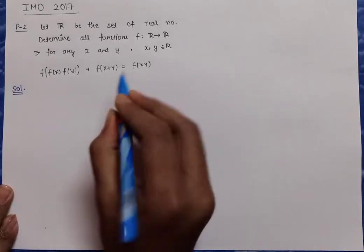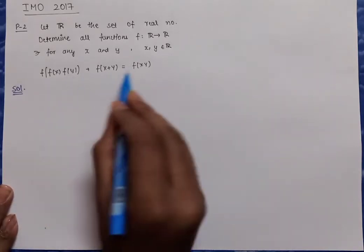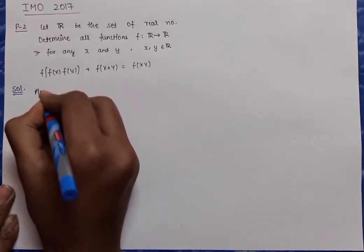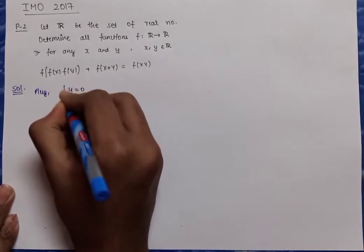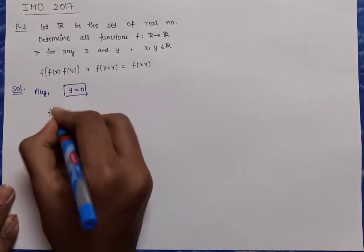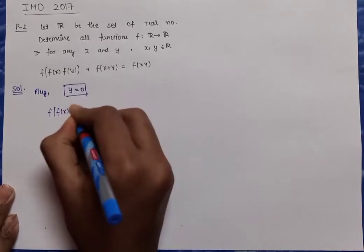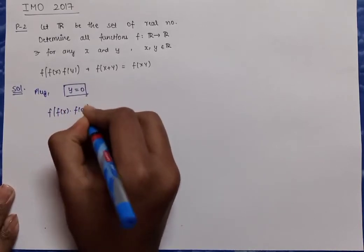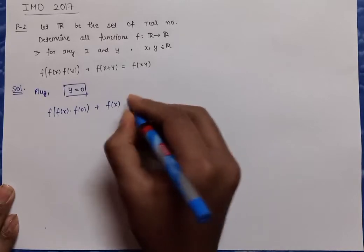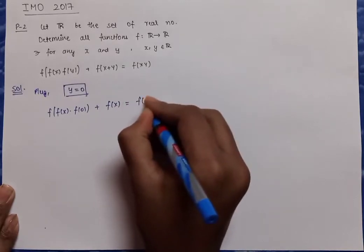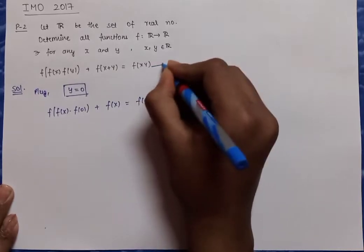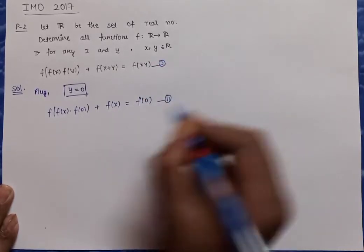Because this functional equation has two variables x and y, I plugged in y=0. The first step was plugging y=0, which gives f(f(x)·f(0)) + f(x) = f(0), since f(x·0) = f(0) = 0. Let's call the original equation number 1 and this result equation number 2.